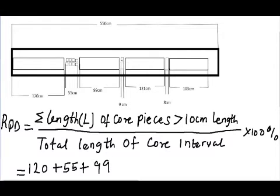Then next we have a core piece of 9 cm. As you can see, this is less than 10 cm, so we're going to exclude it. Next we have a core piece of 121 cm, which is greater than 10 cm, so let's include it.